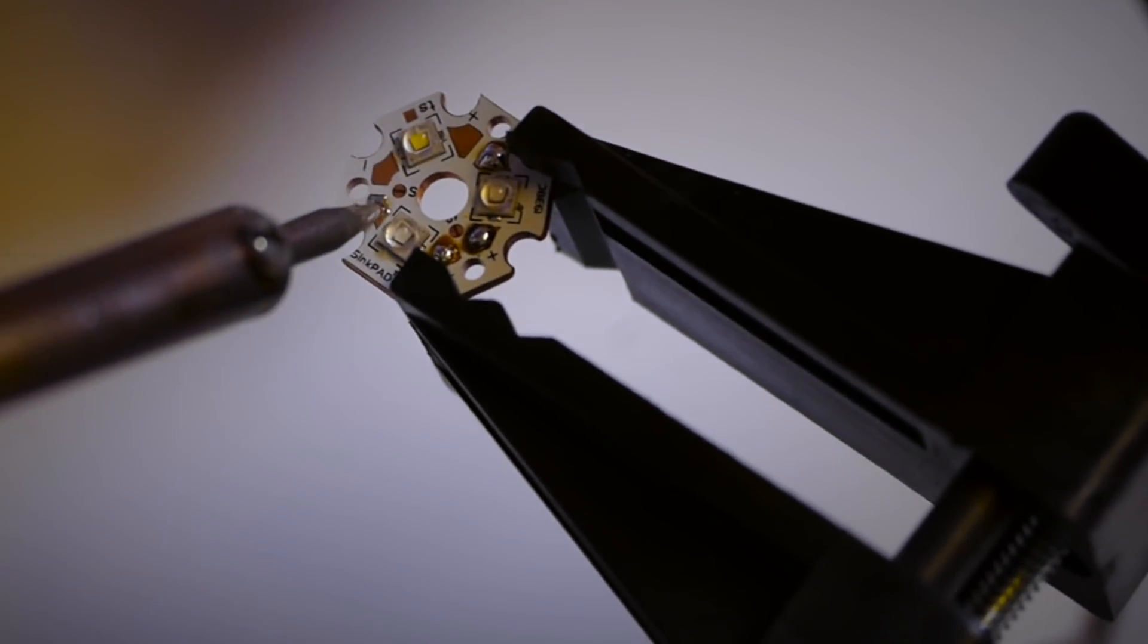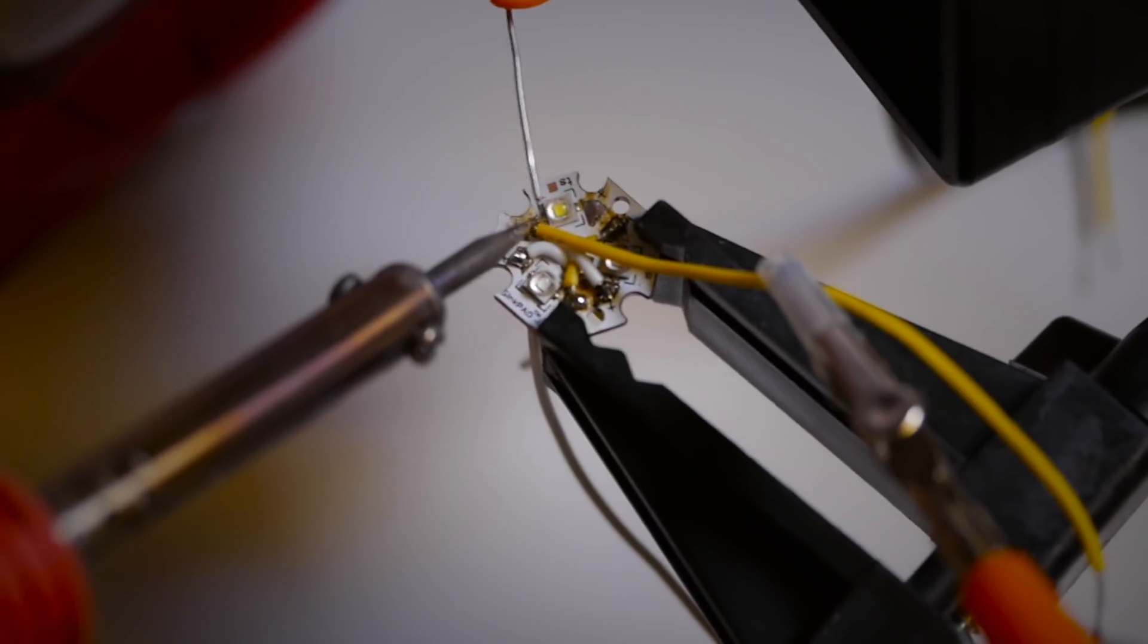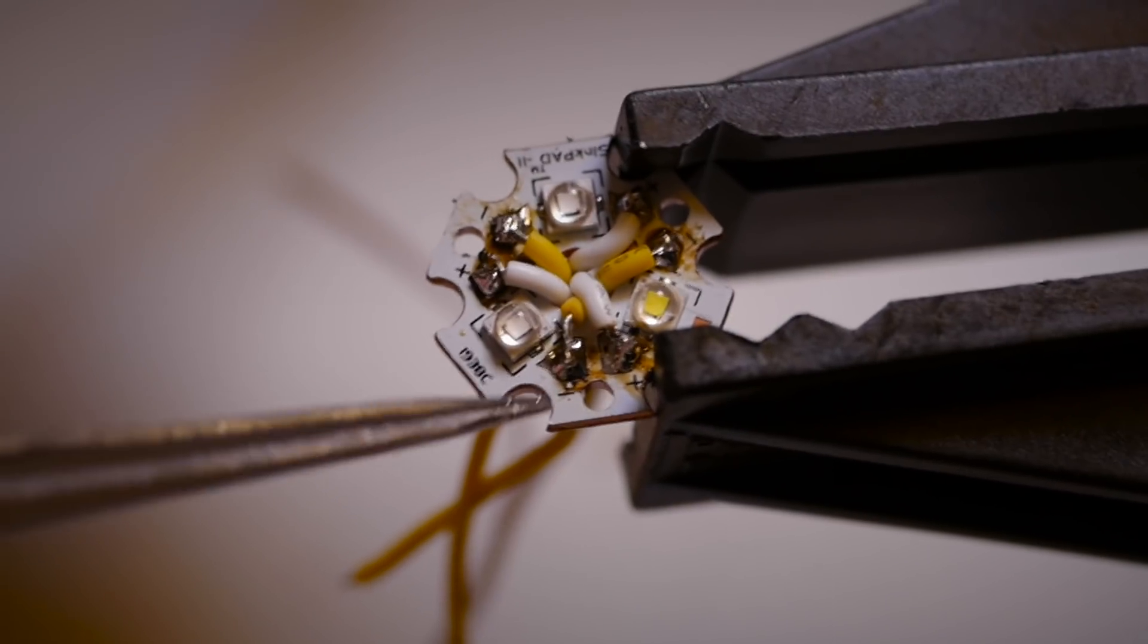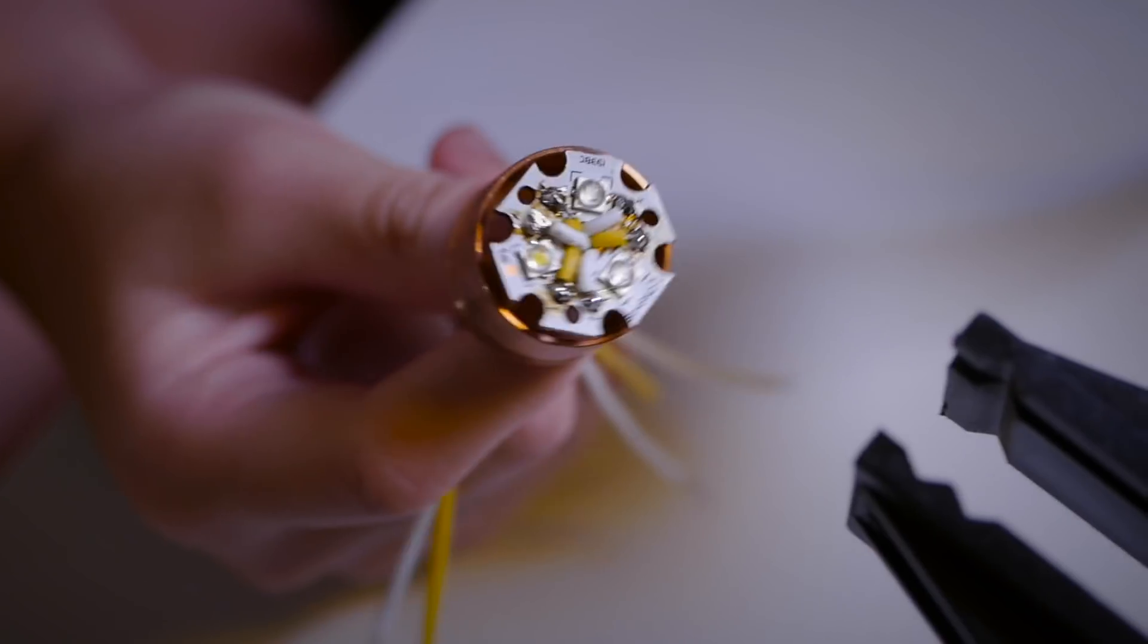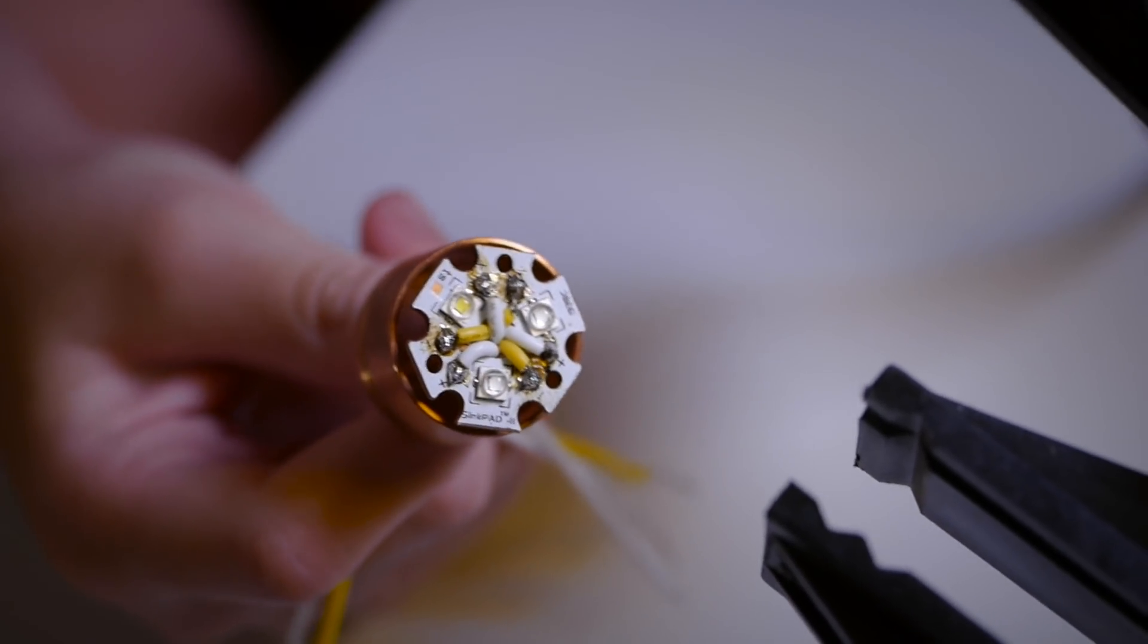This is the part that will light up the blade. It is made of three LEDs, two colored and one white. The white is for the flash when the saber hits something.